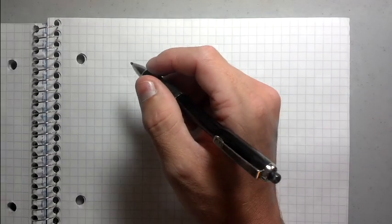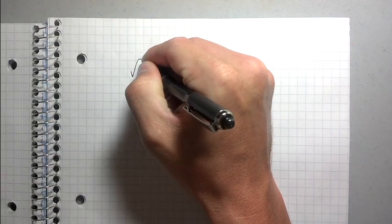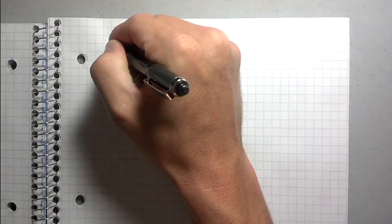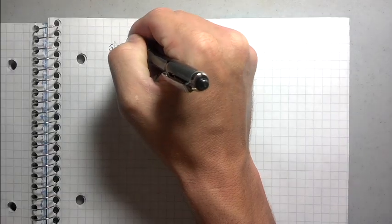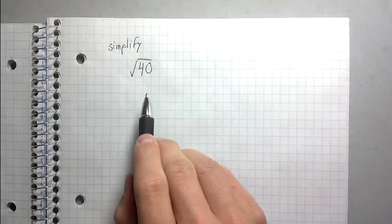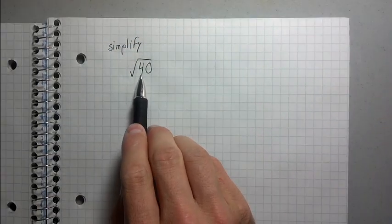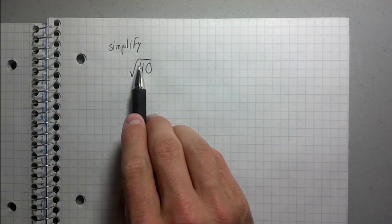So the first one I'm going to start off with is just a simple root 40. And what we're supposed to do is we're supposed to simplify. What they mean by that is they want you to try to pull out factors from this square root sign.